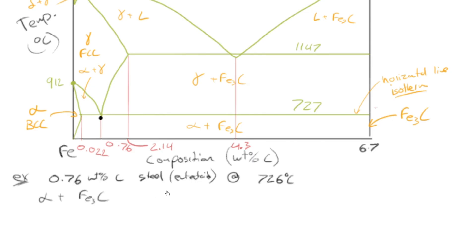What are the compositions? Well, the composition of alpha is draw a line over to the leftmost boundary.